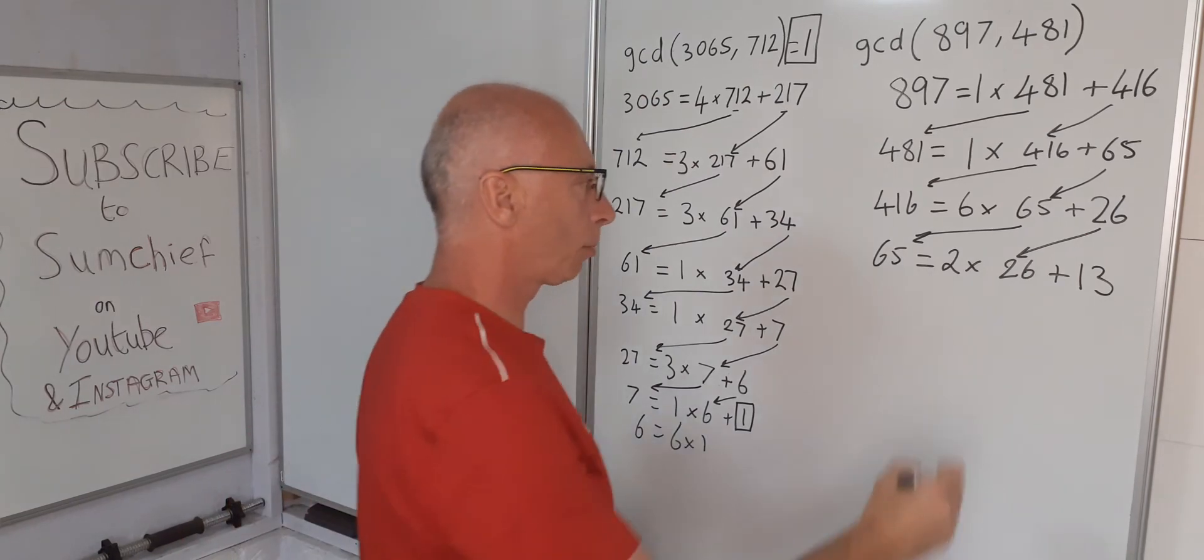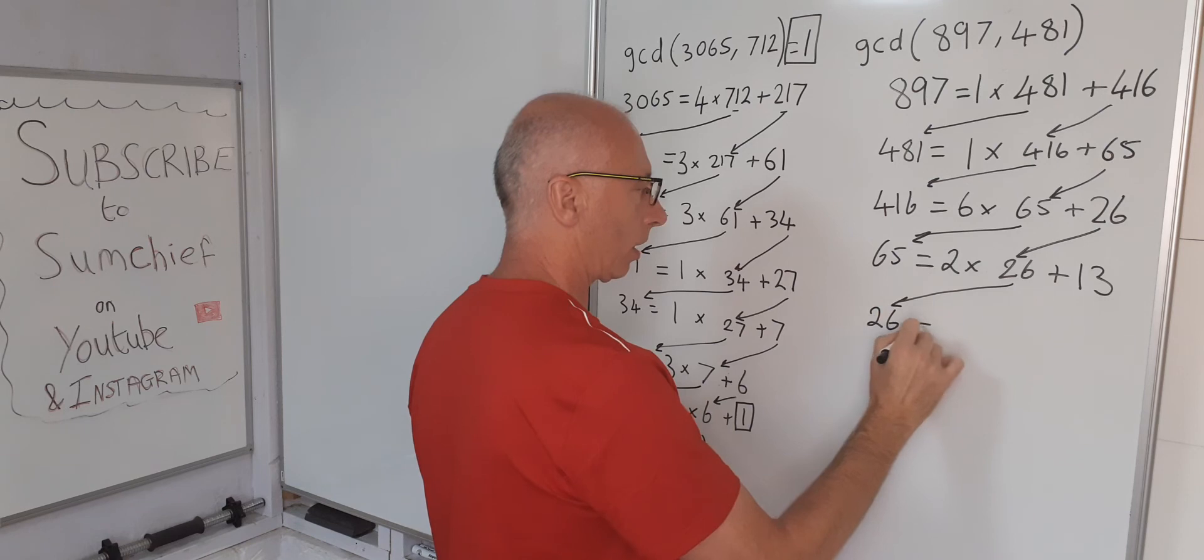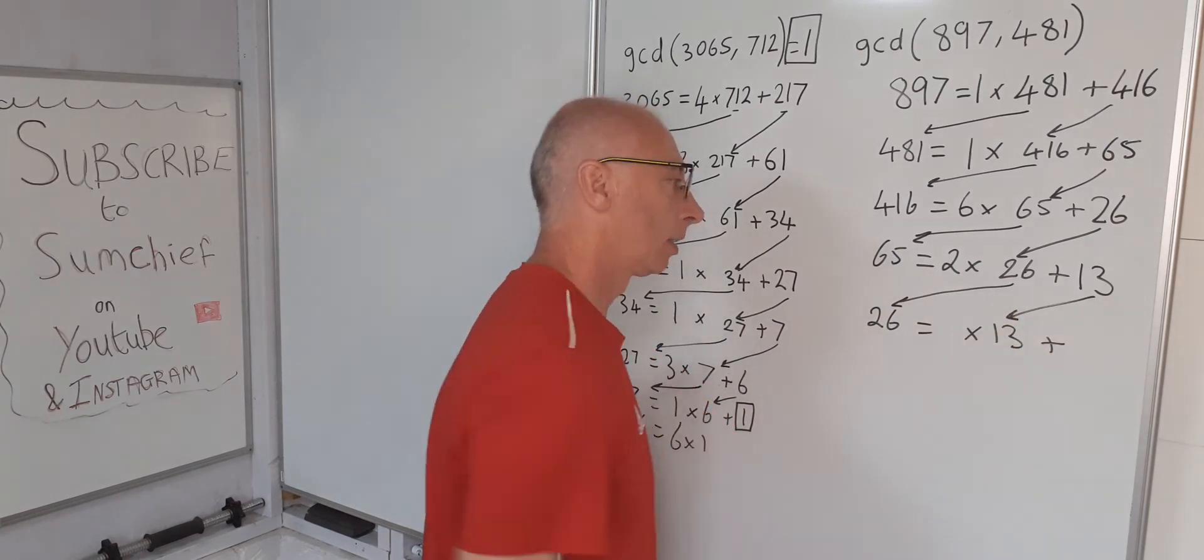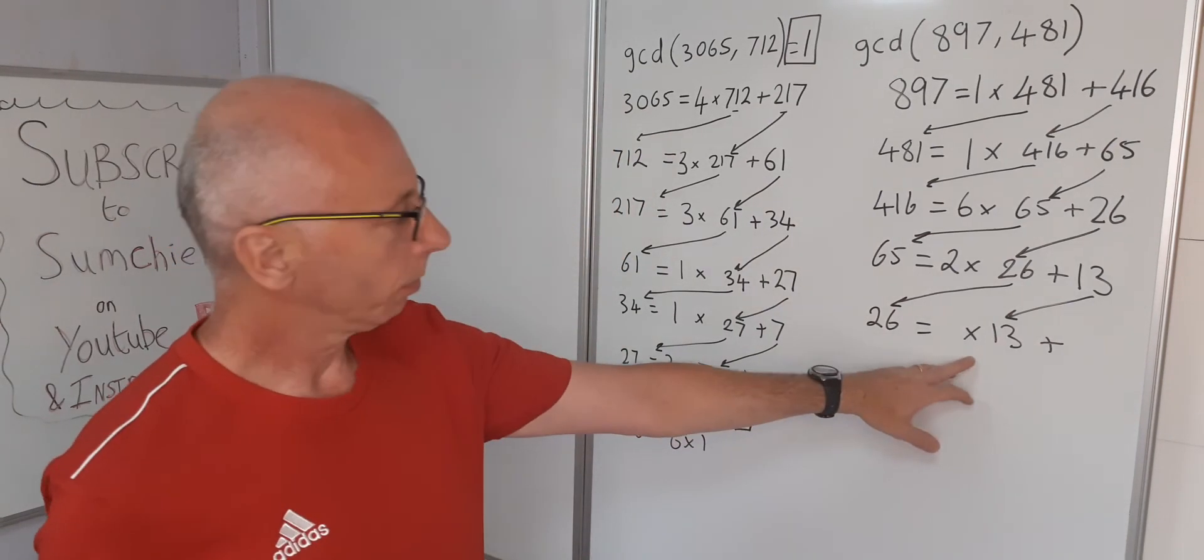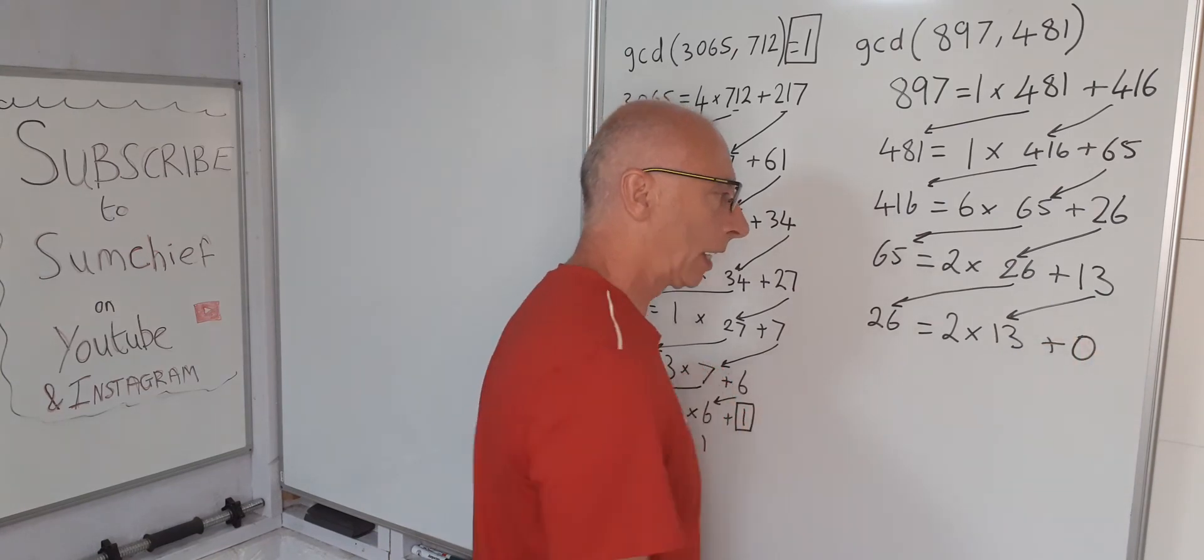Now this is looking promising. 26 equals something times 13 plus a remainder. Well I think we've cracked it here now. 2 times 13 is 26 with 0 remainder.